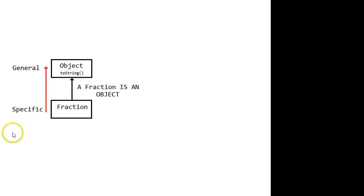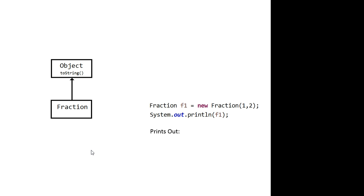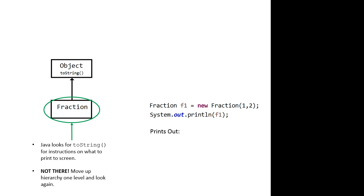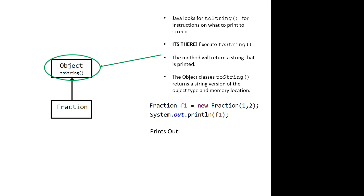When we think of a class hierarchy, we think of specific to general, with object being the most general type. In this diagram, we need to be able to say a fraction is an object. What happens is, if I try and print out a created fraction, Java starts by looking in the fraction class for a toString method. It doesn't find one. So it moves up to the superclass, which happens to be object. That toString is a very generic one which returns the object type and memory location as a string.